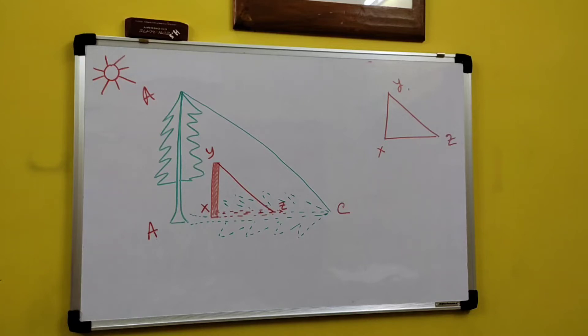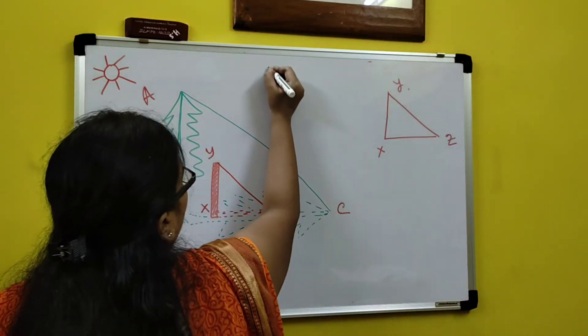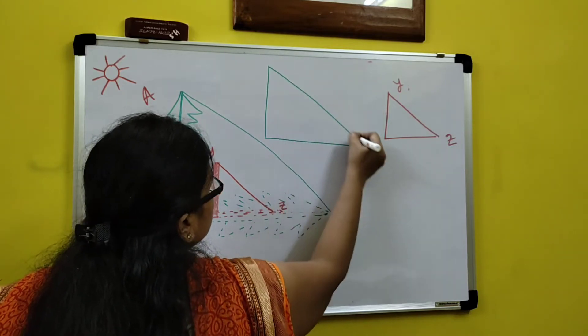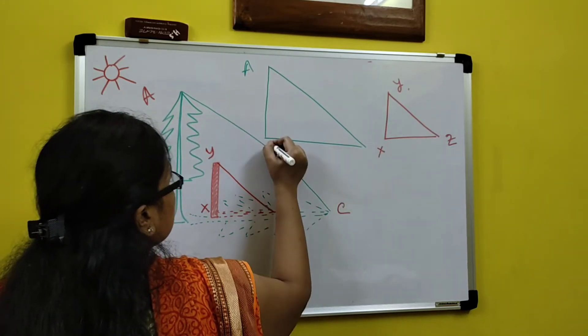As I am saying, we are measuring the height of the tree without climbing over here. One triangle I got, that is XYZ, and another triangle suppose here. It is a long big triangle.